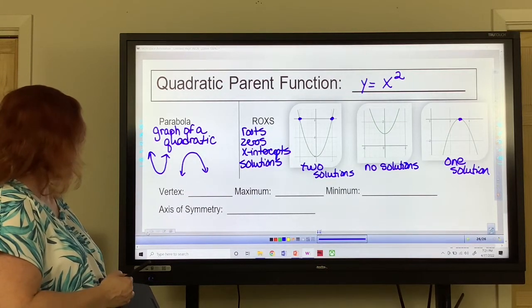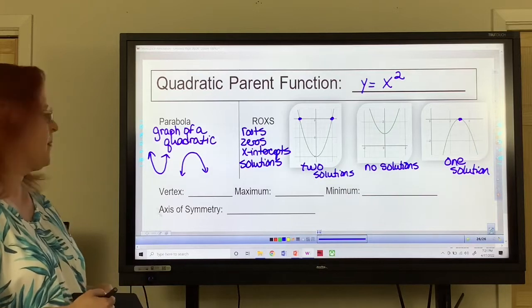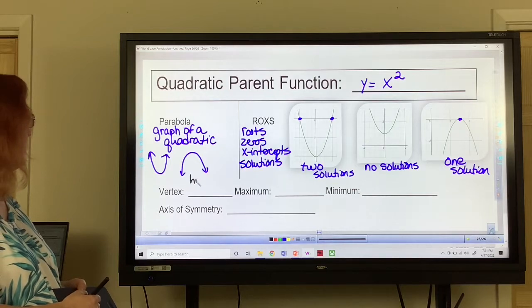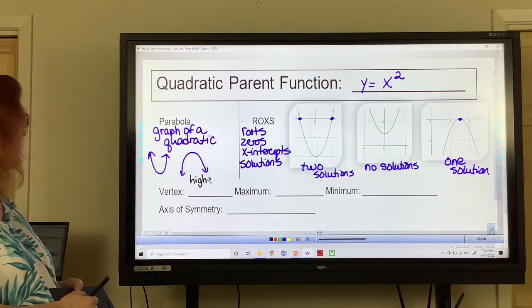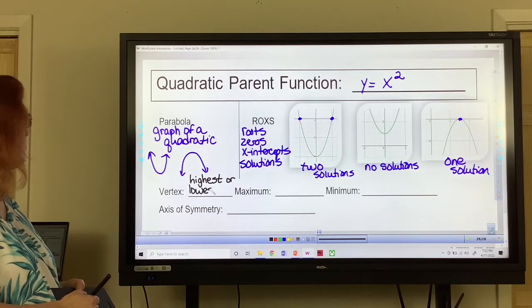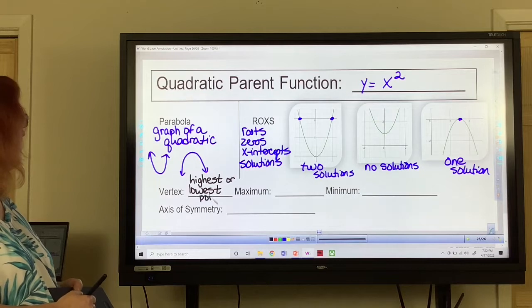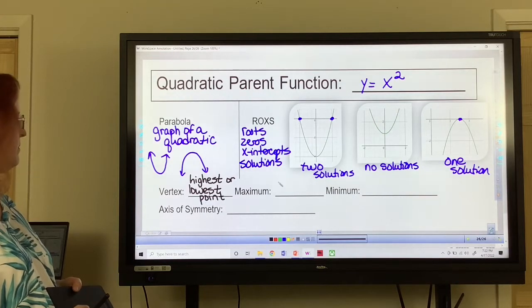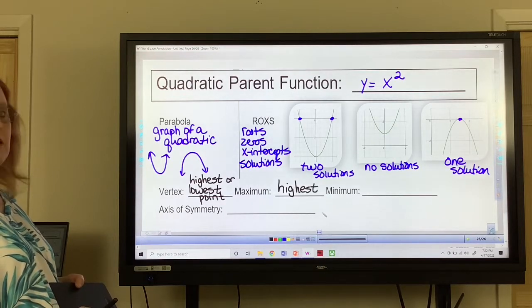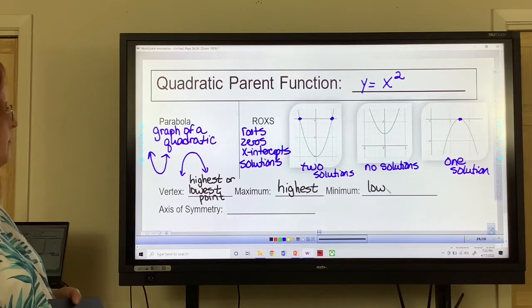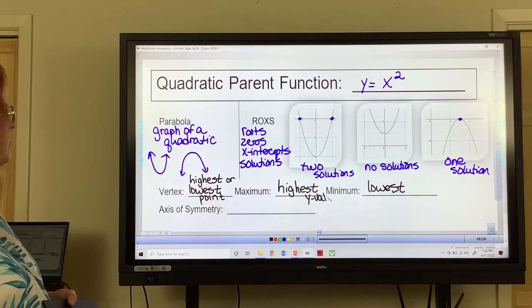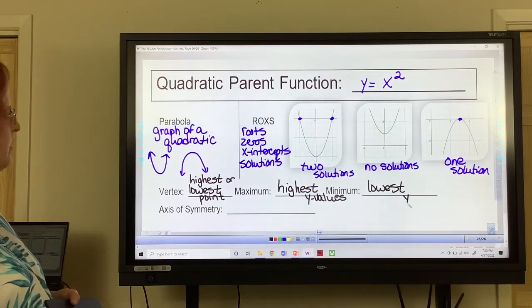We've got some other words we have to know the meaning of. Vertex. It is the highest or lowest point on the graph. If it's a maximum, that is the highest. Minimum would be the lowest. And these would be the y values. So it's the highest y value or the lowest y value.